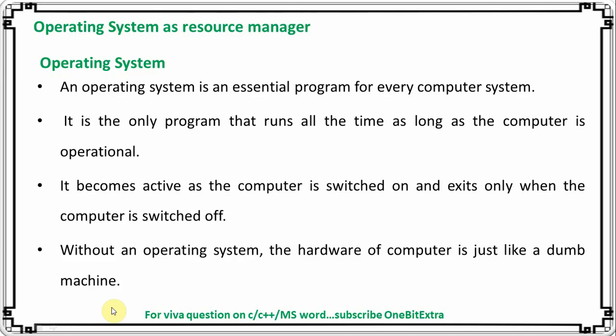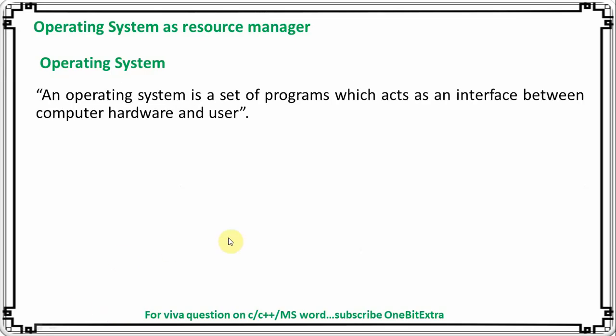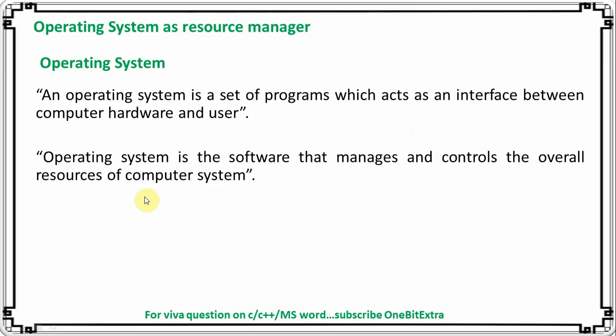The definition of an operating system is: it is a set of programs which acts as an interface between computer hardware and the user. It is a system software — a set of programs — that manages and controls the overall operation of the computer system, managing all resources.